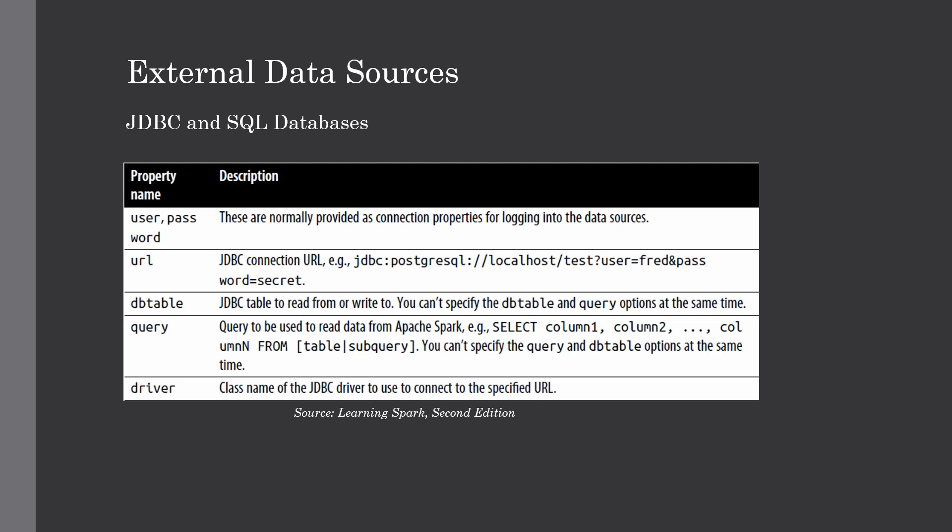To get started, you need to specify the JDBC driver for your data source on the Spark class path. From your Spark home directory, issue the spark-shell command with the driver class path and the relevant JAR file. The JAR file is important for making the integration with the source database. Key connection properties include username and password for logging in, and the URL — specifically the JDBC connection string.